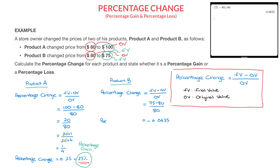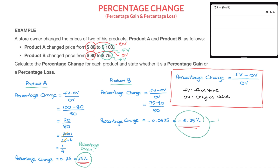We need to express this result as a percentage. Looking at the hundredths position: we have the units, tenths, and hundredths — and since we have six hundredths here, this decimal equals negative 6.25%. Since we obtained a negative result, this percentage change corresponds to a percentage loss. So Product B's price change is a percentage loss of 6.25%.